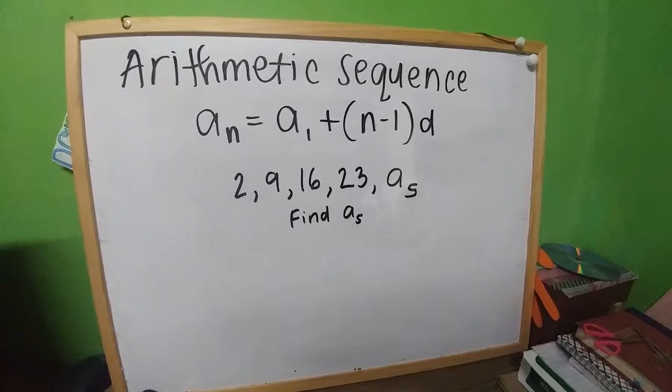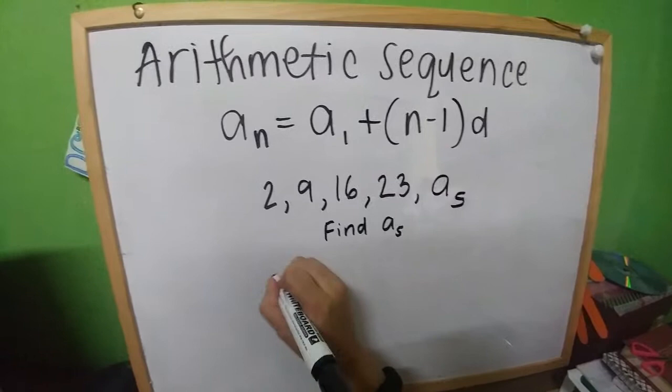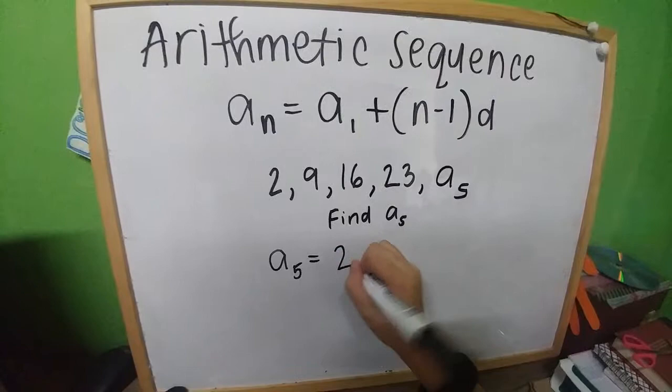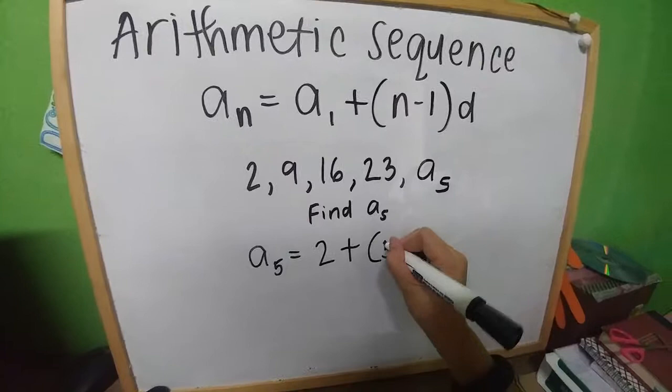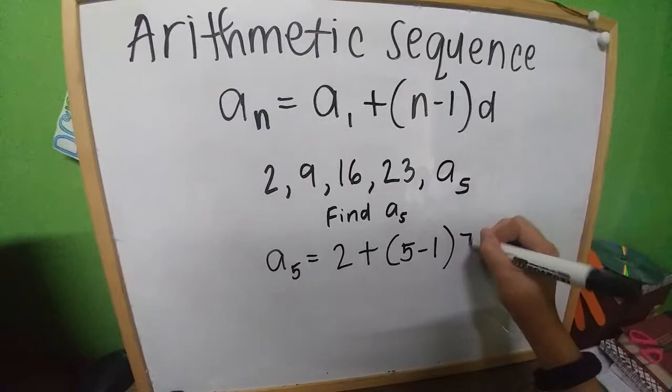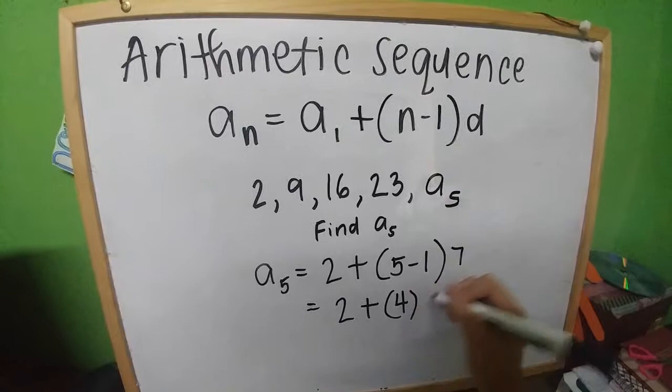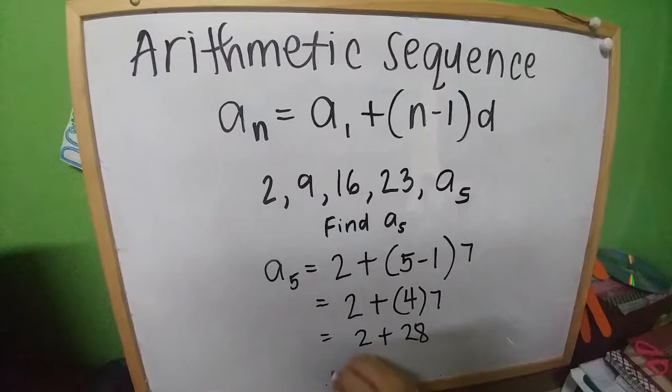A sub 5 equals the first term which is 2, plus quantity n which equals 5 minus 1, times the common difference which is 7. 2 plus 4 times 7, 2 plus 28. Now we know that the fifth term is 30.